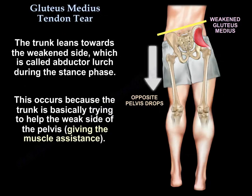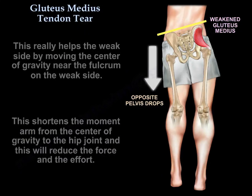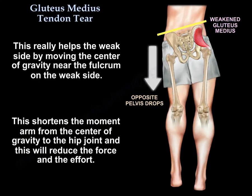The trunk leans towards the weak side because it is trying to help by giving the muscle assistance — leaning towards the muscle. This moves the center of gravity near the fulcrum on the weak side, shortening the moment arm from the center of gravity to the hip joint, thereby reducing the force and effort required.